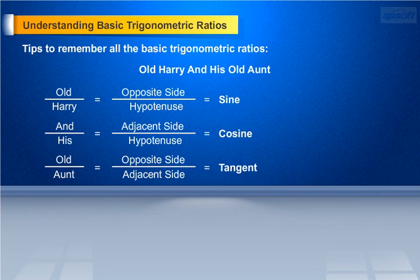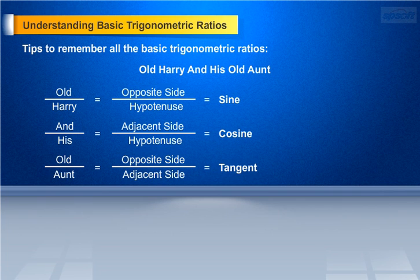And by his equals adjacent side by hypotenuse, which is equal to cos A. Old by aunt equals opposite side by adjacent side, which is equal to tan A. Remember that cosecant, secant and cot are reciprocals of sine, cosine and tangent respectively.